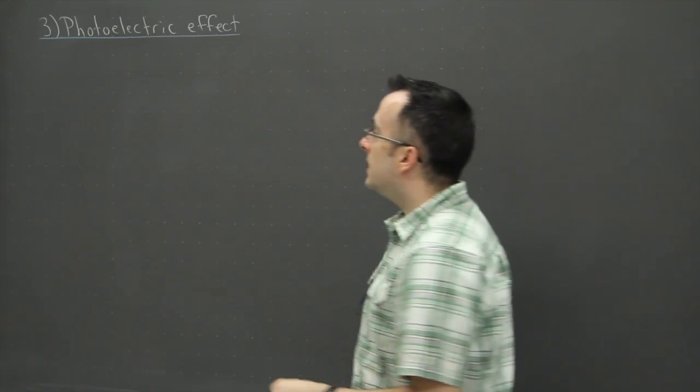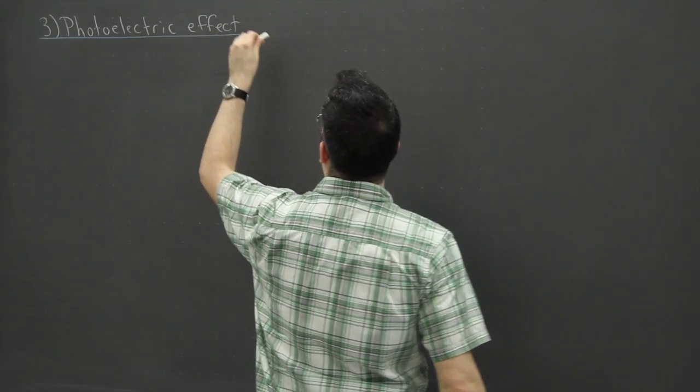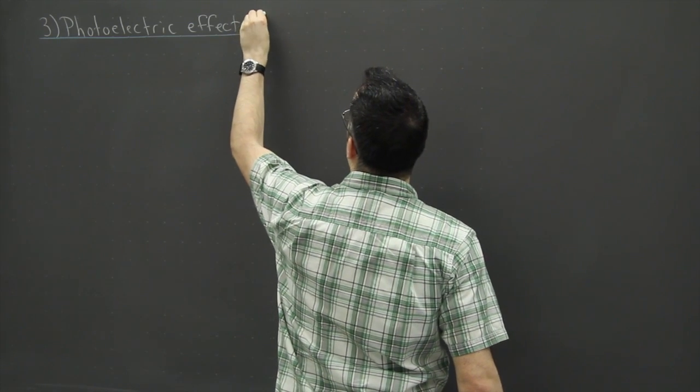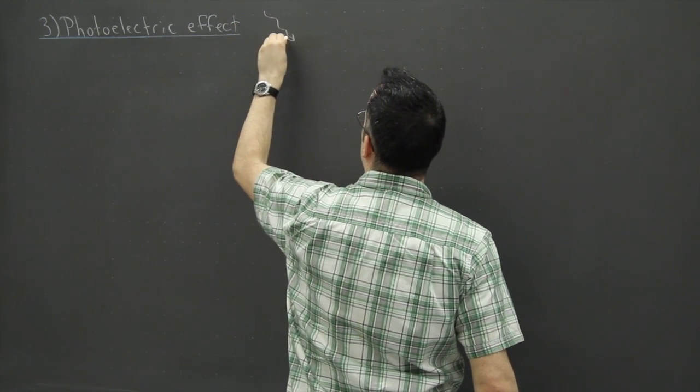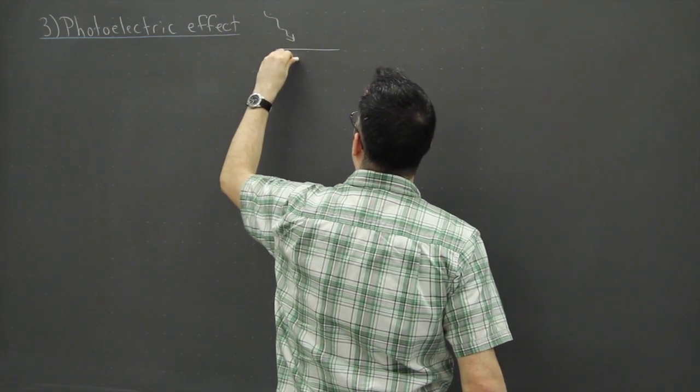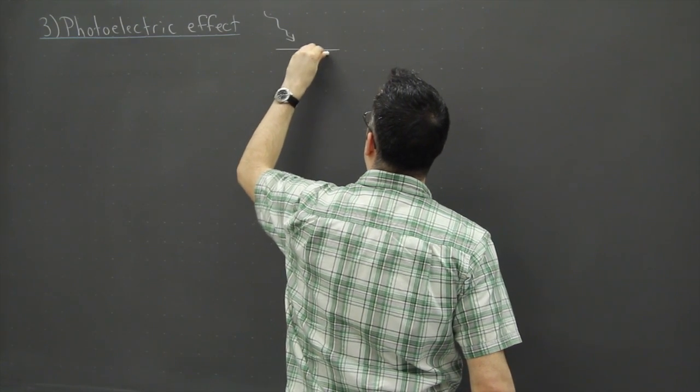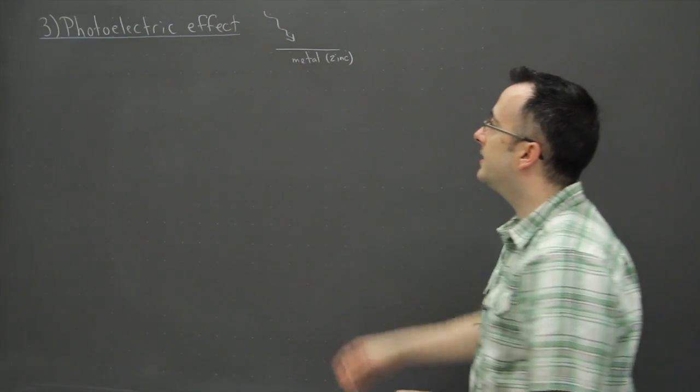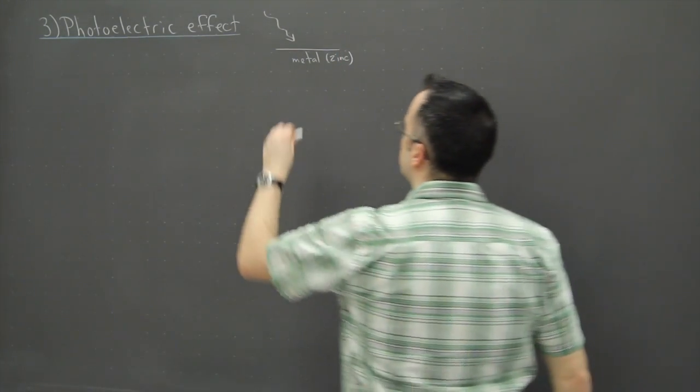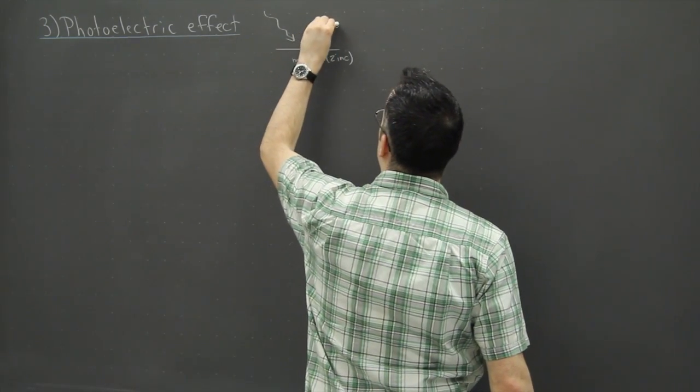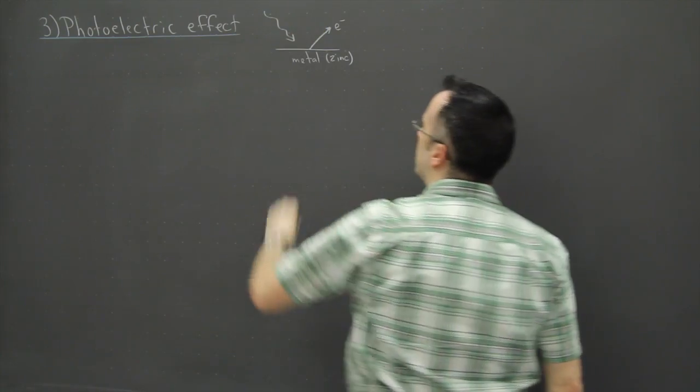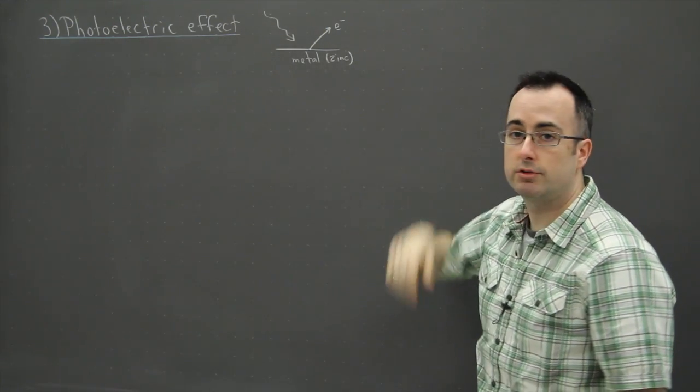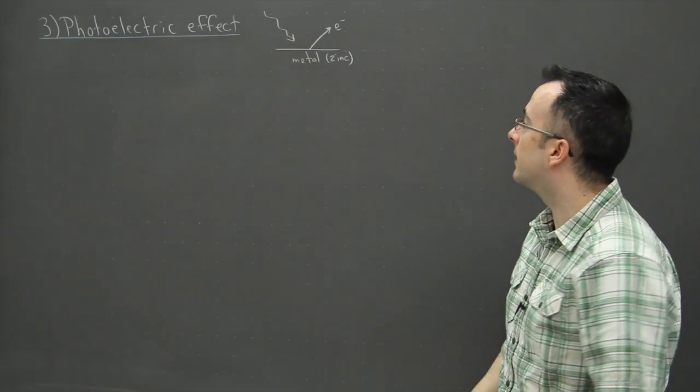So here's what happens. In the photoelectric effect you have light coming in, so let's say we've got some photons coming in here and they're hitting some metal surface, maybe it's zinc for example, and when the light comes in it can actually kick out electrons. Okay, so incoming light actually kicks out electrons, that's the photoelectric effect.